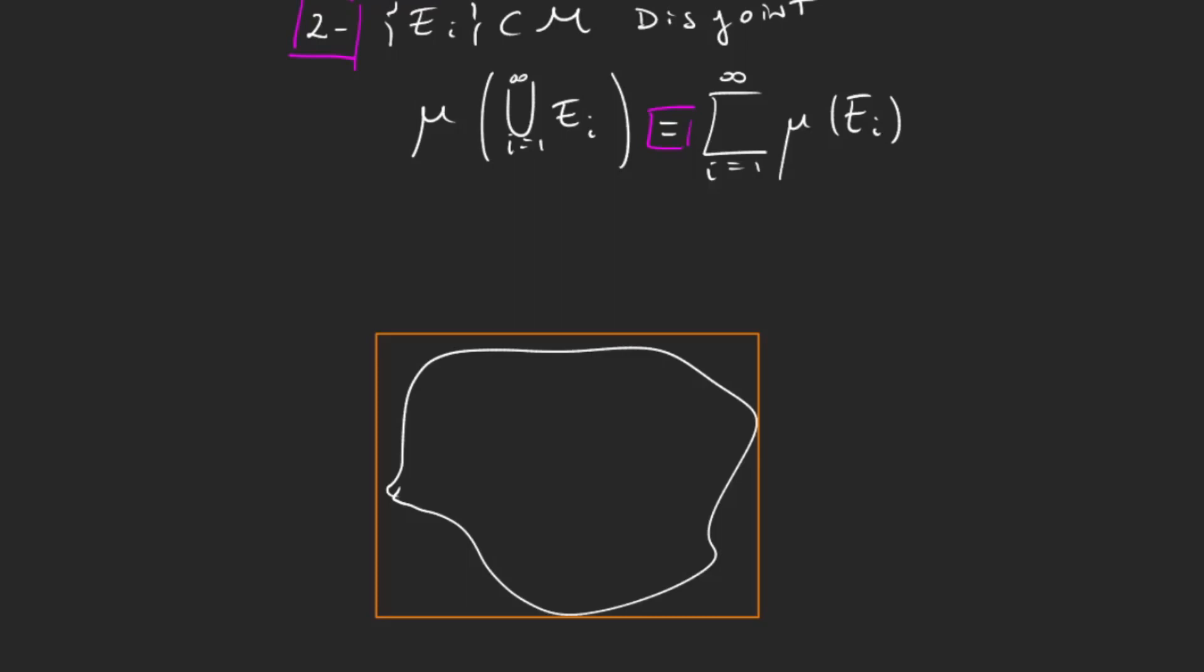You could go even further and say, well, instead of one rectangle, I can give you two—one like this and another one like this. So the sum of the areas of the two rectangles will be bigger than the area of the object, but it's also smaller than the area of the orange rectangle.